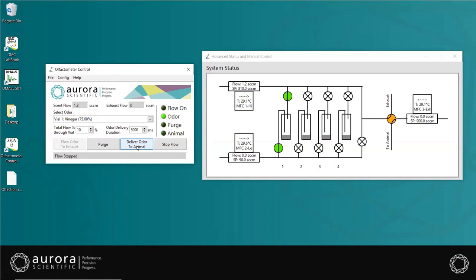Once complete and all vials are emptied, it is important to purge the system, which opens all the valves and flows clean air throughout to wash away residual odorant. After this is completed, you can select Stop Flow, which shuts off all valves.